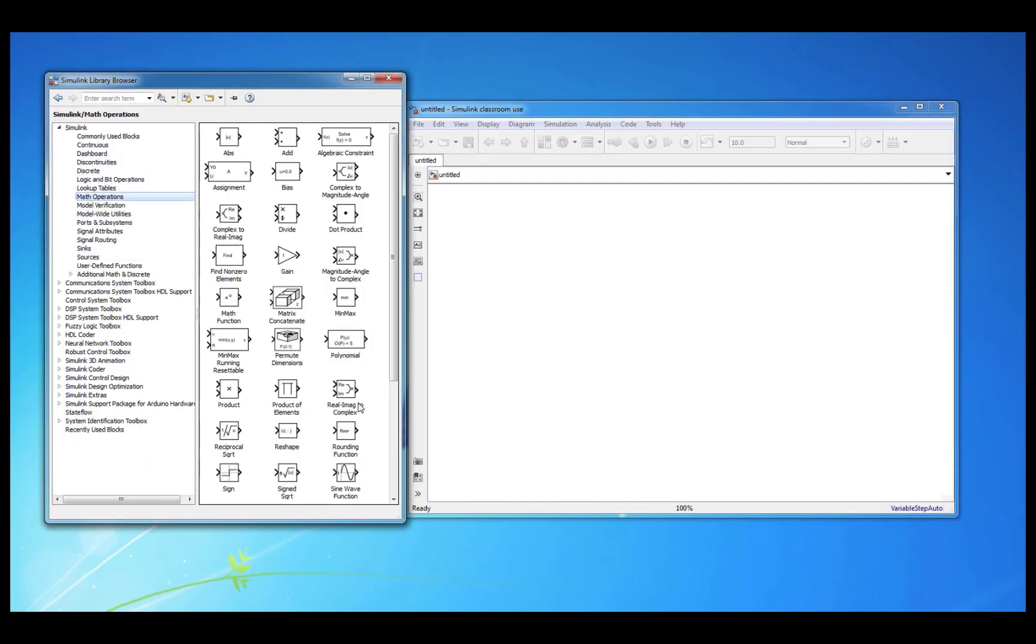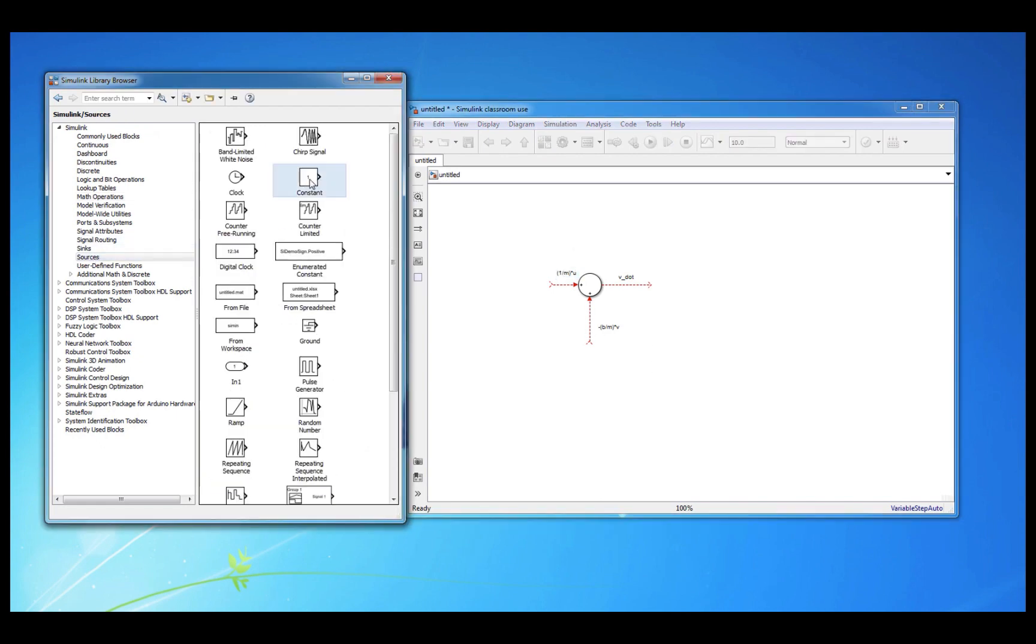Doing so is pretty simple. All we have to do is use the library browser that we explored in a previous video. Just drag and drop all of the required blocks and build the block diagram as you have sketched to complete the Simulink model.